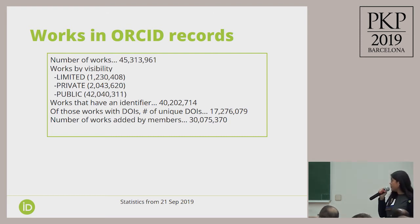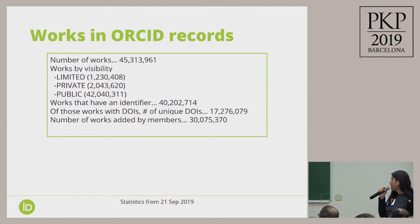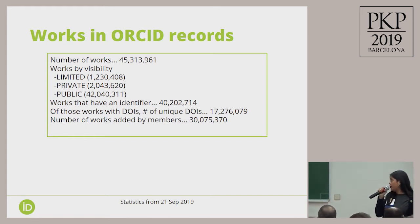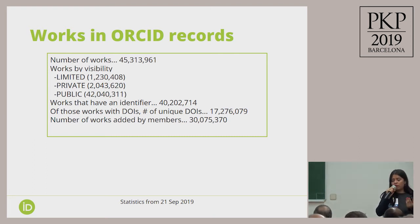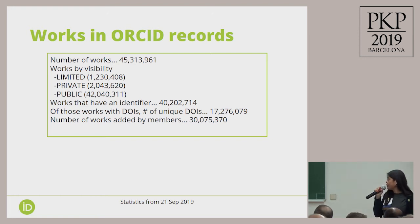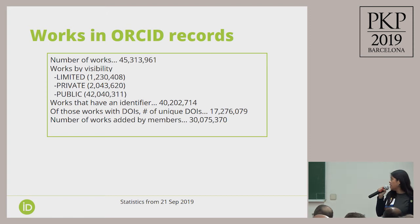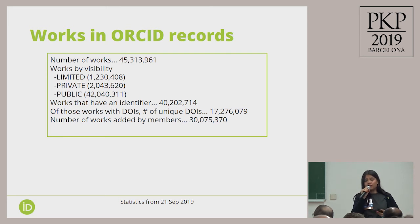Some statistics on the volume of data flowing in our registry: currently we have more than 45 million works. We call it works and not publications because we consider many types of contributions — not only publications, but also preprints, software, datasets, patents, conference posters, and many more. You can see there are more than 17 million unique DOIs, and most of this data is being added to our registry by member organizations.